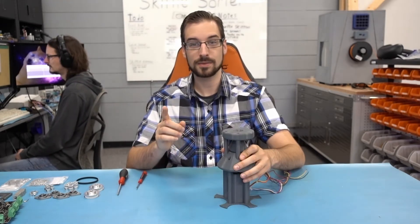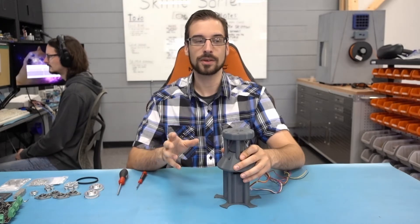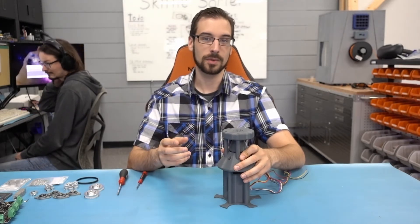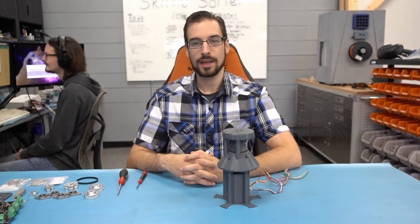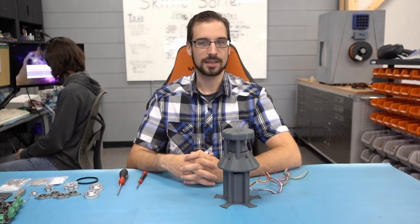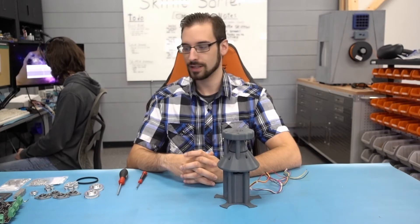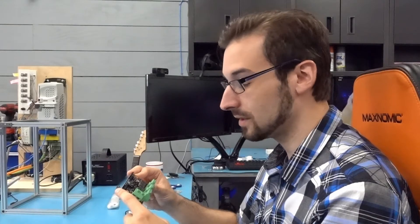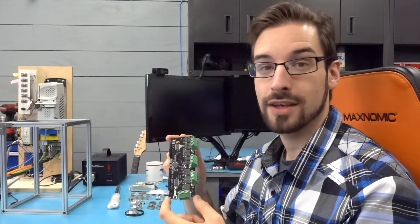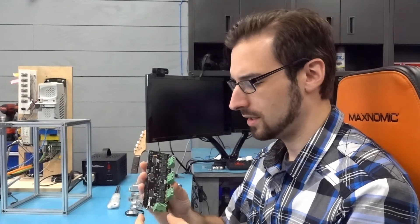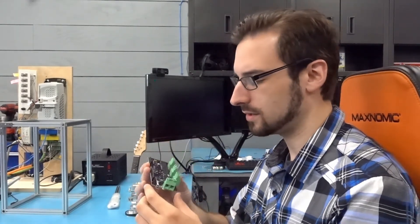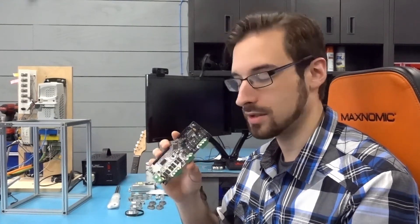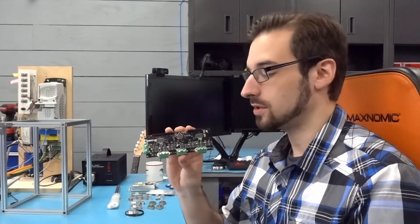The only difference between a BLDC motor that hobbyists use and an industrial servo motor is the control system. And the control system really shouldn't be that expensive. It's mostly software. The electronics are actually very cheap. It's called the O-Drive, and it's in its fledgling state right now. It's Alpha version 3.2. It needs a lot of work on the software side, but it looks very promising. And it can already do enough for what we need to do here in the Skittle Sorter.